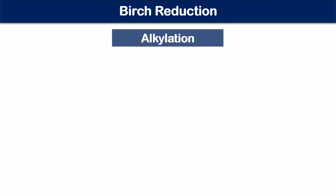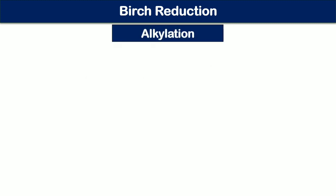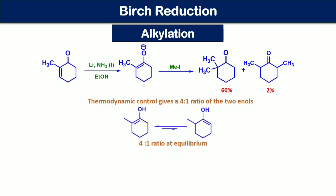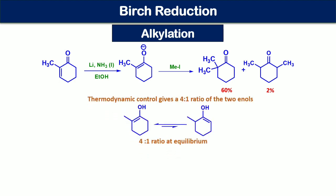The last part covers alkylation — trapping of the enolate ion with alkyl halides. The first example is regioselective methylation of the enolate ion in the reaction medium, but two percent of the minor regioisomer is also found because thermodynamic control gives a 4:1 ratio of the two enols. The first enol is more substituted and more stable, so the equilibrium population favors it, leading to the major regioisomer. The less substituted enol leads to the minor regioisomer.